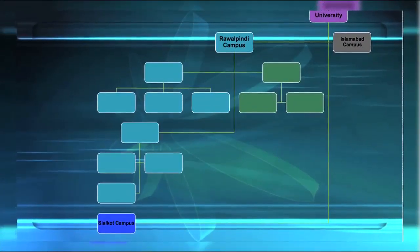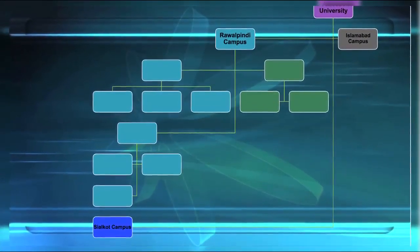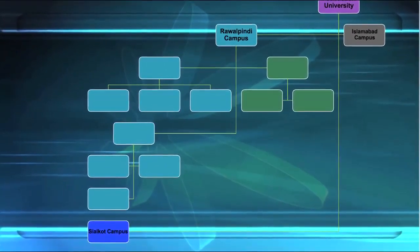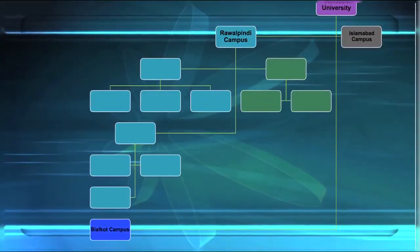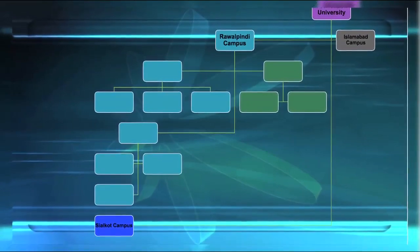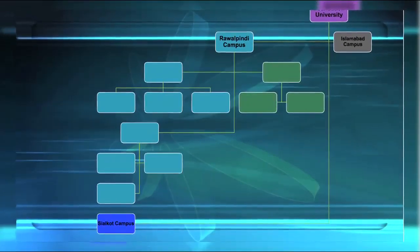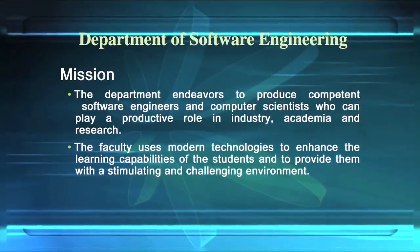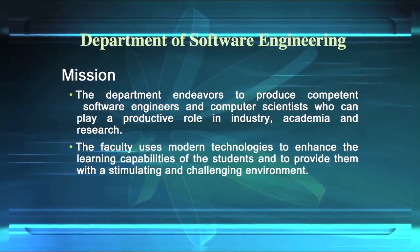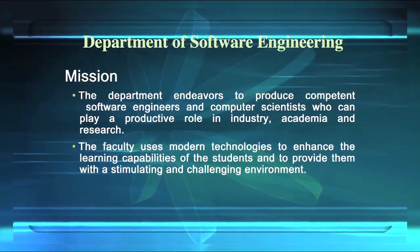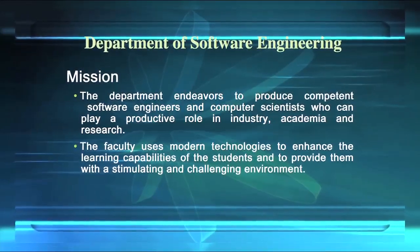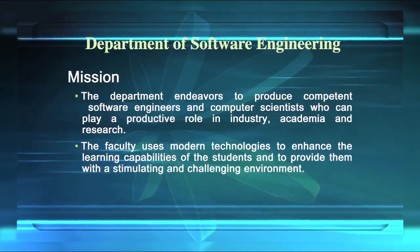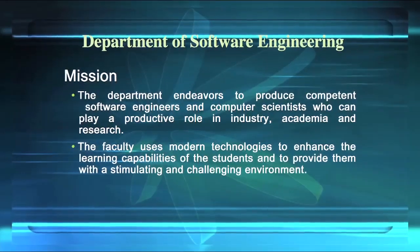Foundation University Islamabad has three campuses: Rawalpindi Campus, Islamabad Campus, and Sialkot Campus. Rawalpindi Campus has three faculties: the Faculty of Business and Technology, the Faculty of Engineering and Technology, and the Faculty of Liberal Arts and Social Sciences. The Faculty of Engineering and Technology has two departments: the Department of Software Engineering and the Department of Electrical Engineering.